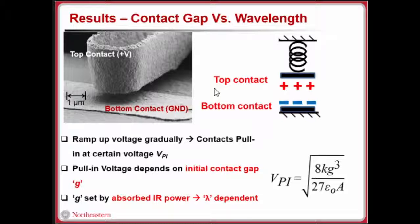The contacts have a finite overlap region, the top and bottom contact. This forms a parallel plate capacitor that is attached to a spring, in this case, the cantilever. As the voltage bias is ramped up, the electrostatic forces keep increasing and at a certain voltage called the pull-in voltage, the contacts snap together. That pull-in voltage is dependent on the initial contact gap and is given by this equation. As the initial contact gap is smaller, the pull-in voltage is smaller.